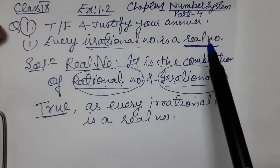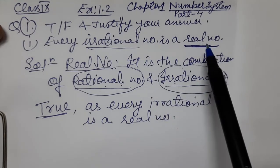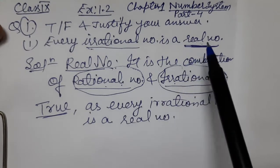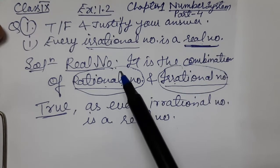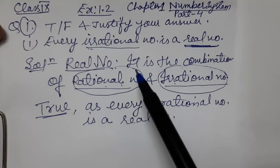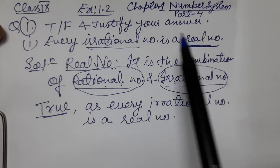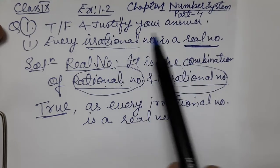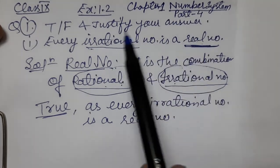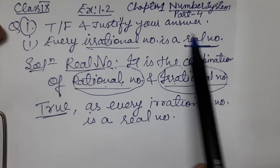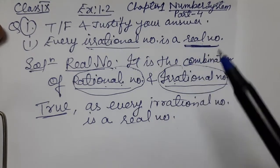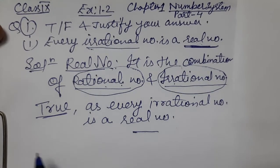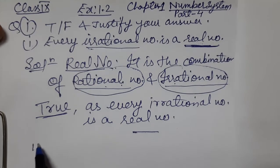Because if we have all the real numbers, rational and irrational numbers are both included. So irrational numbers are also real numbers, and rational numbers are also real numbers. That completes the first question.